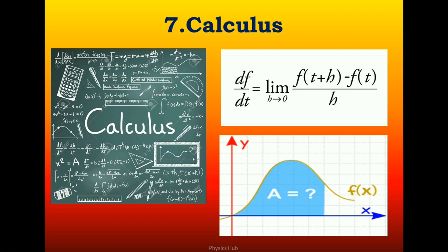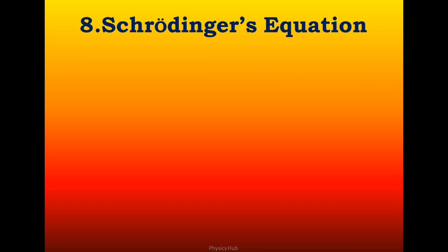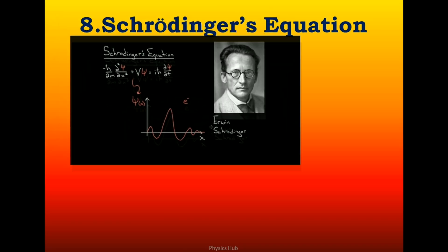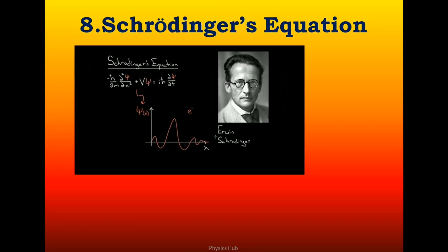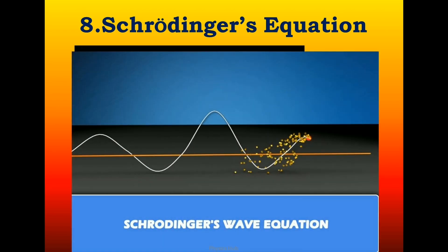The eighth equation is the Schrödinger equation. This equation describes how the quantum state of a quantum system changes with time. Developed by Austrian physicist Erwin Schrödinger in 1926, it governs the behavior of atoms and subatomic particles in quantum mechanics. Schrödinger's equation paved the way for nuclear power, microchips, electron microscopes, and quantum computing.